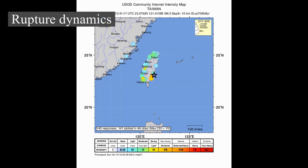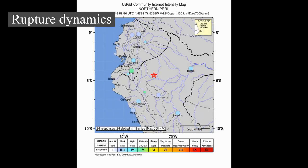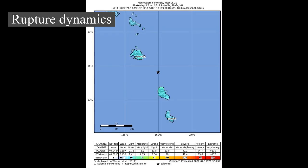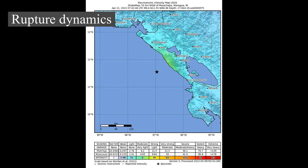Rupture dynamics: A tectonic earthquake begins as an area of initial slip on the fault surface that forms the focus. Once the rupture has initiated, it propagates away from the focus, spreading along the fault surface. Lateral propagation continues until the rupture reaches a barrier, such as the end of a fault segment, or a region with insufficient stress. For larger earthquakes, the depth extent of rupture is constrained downwards by the brittle-ductile transition zone and upwards by the ground surface. The mechanics of this process are poorly understood. In most cases, rupture speed approaches but does not exceed the shear wave (S-wave) velocity of the surrounding rock.